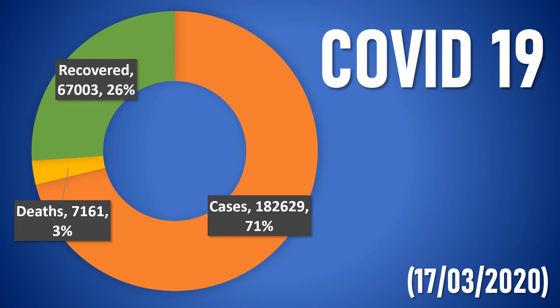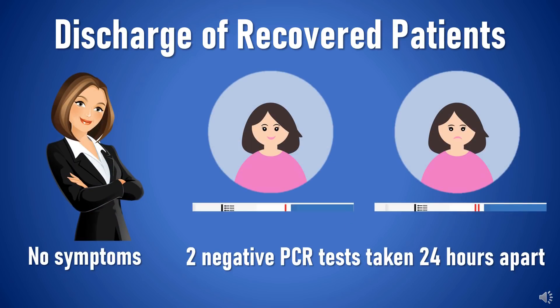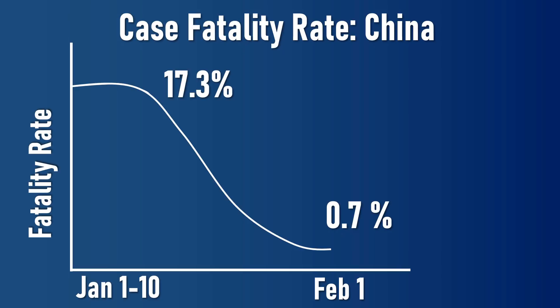It is crucial to note that about 26% of patients have recovered, and most patients will recover soon. Patients are discharged after clinical recovery with no symptoms and two negative PCR tests taken 24 hours apart. Upon discharge they are asked to minimize family and social contact and to wear a mask. In China, the overall CFR was higher in the early stages at 17.3%, which reduced over time to 0.7% by February 1st, meaning that with proper control the condition can be stabilized.